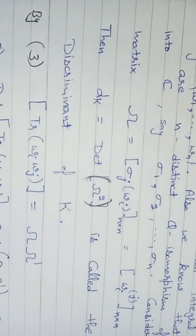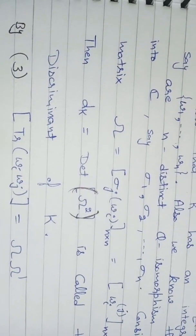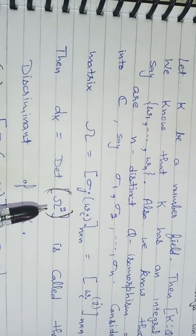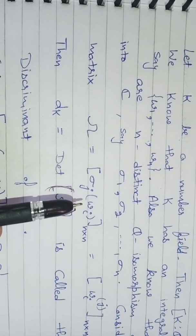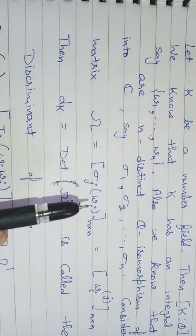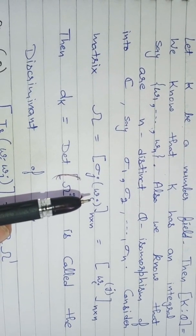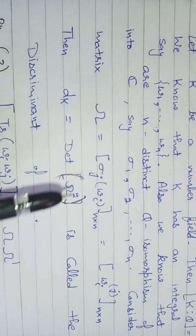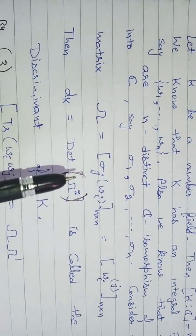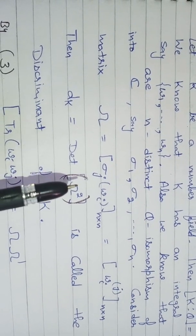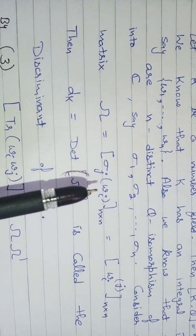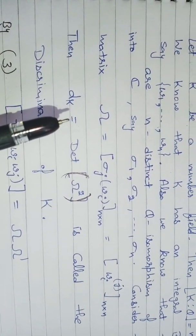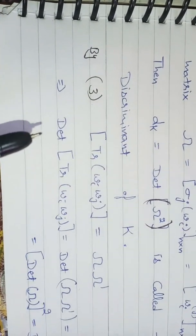Now we have to show that d_K is well defined. What we mean by well defined is that d_K is the determinant of Omega squared, where Omega depends on sigma_j and w_i. If we change w_i then this matrix will change and d_K will change, so we have to prove it is well defined. This means we have to show that if we choose another integral basis, say x_i, then d_K must remain the same.